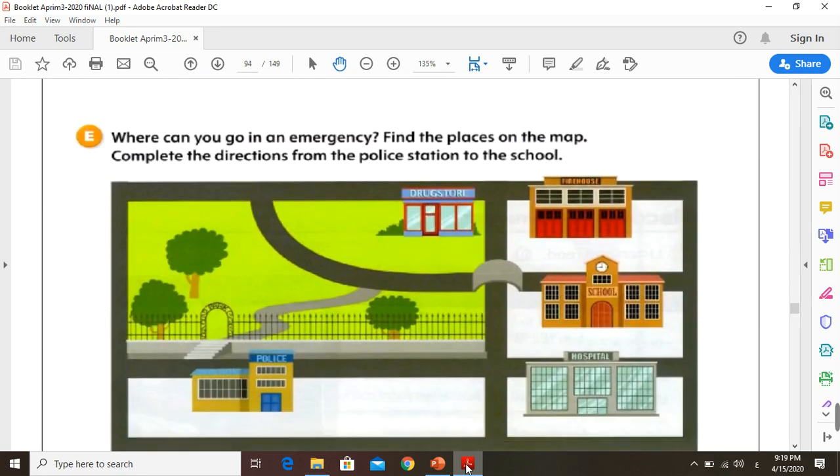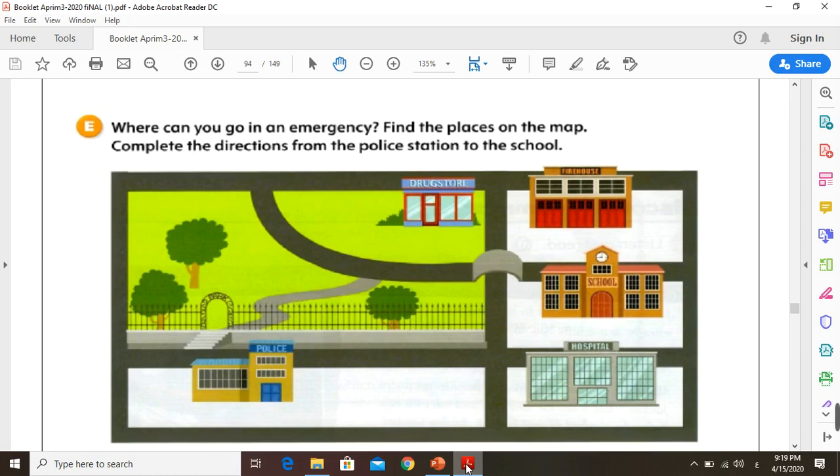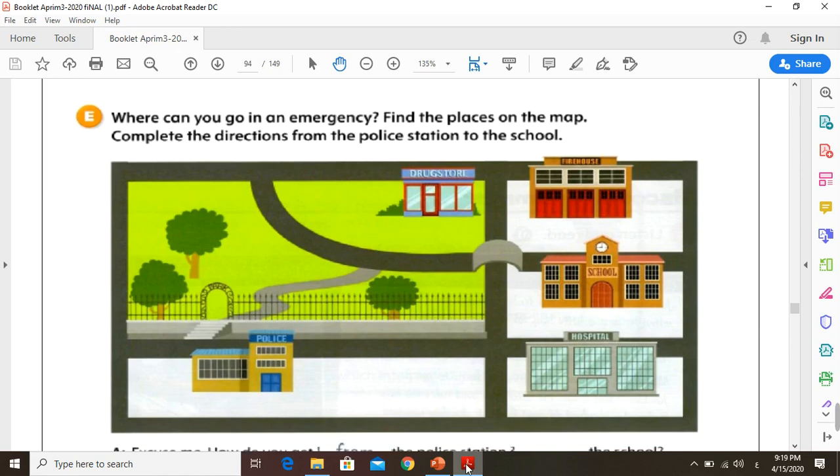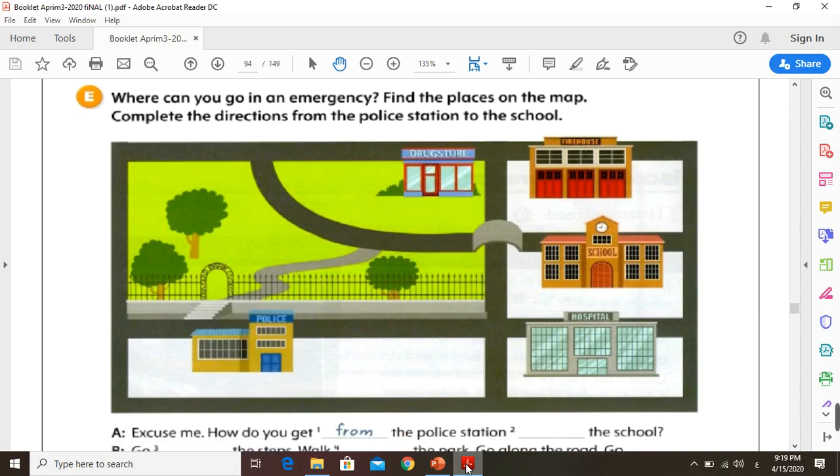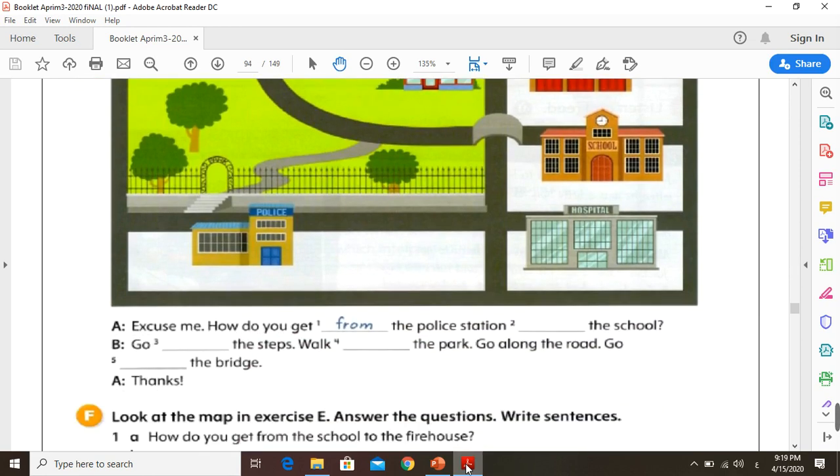Now we have here a picture. You can use it to write some directions about going from police station to drugstore or to school. So we can use different prepositions, maybe over the bridge, maybe through the park, maybe under the bridge. We can use different prepositions. I can leave it for you to think about it.